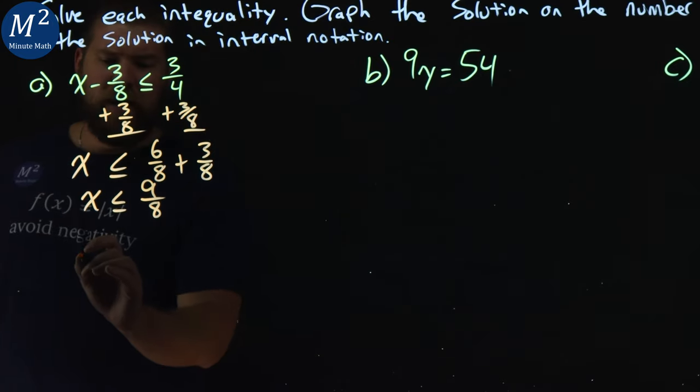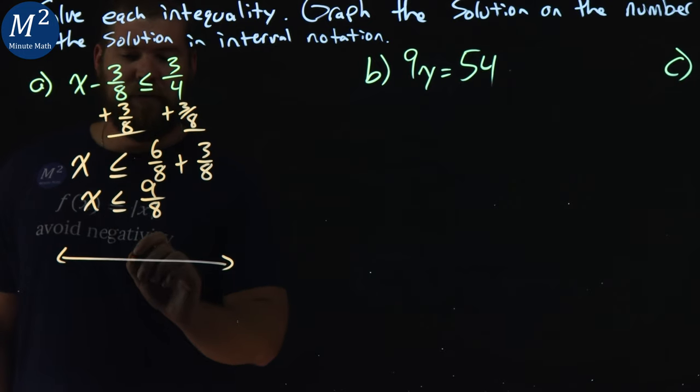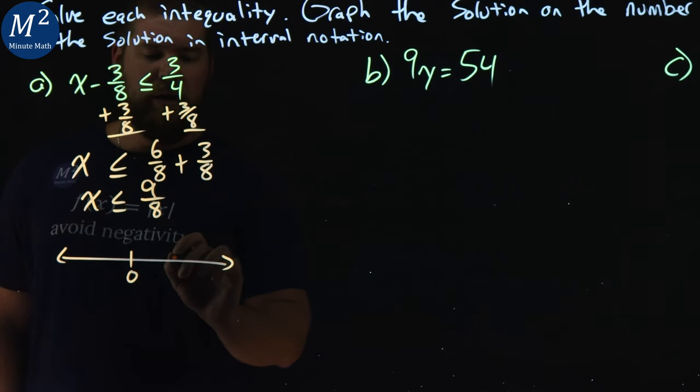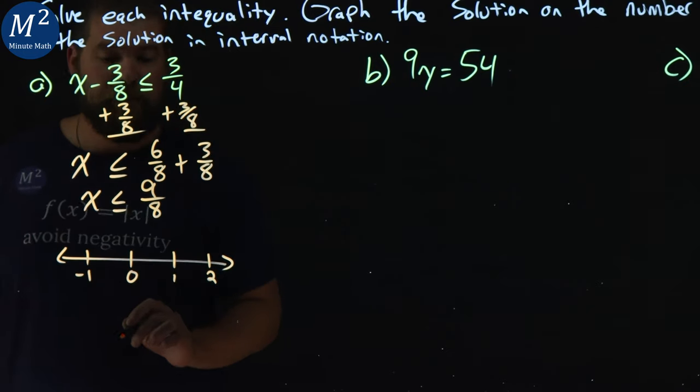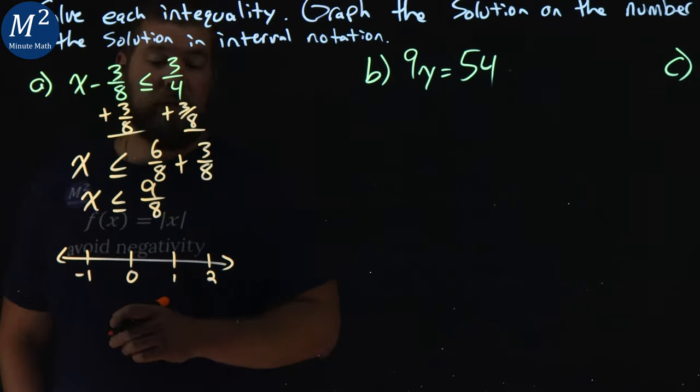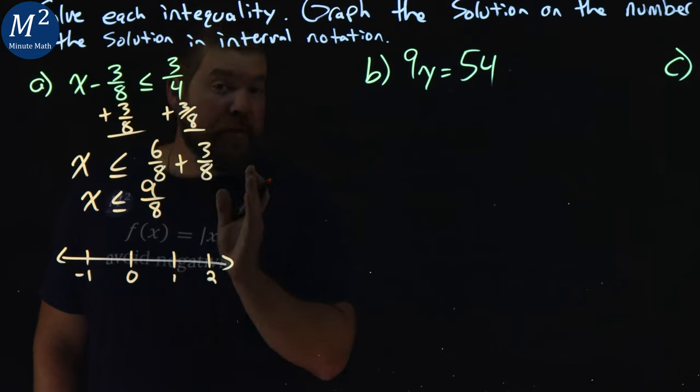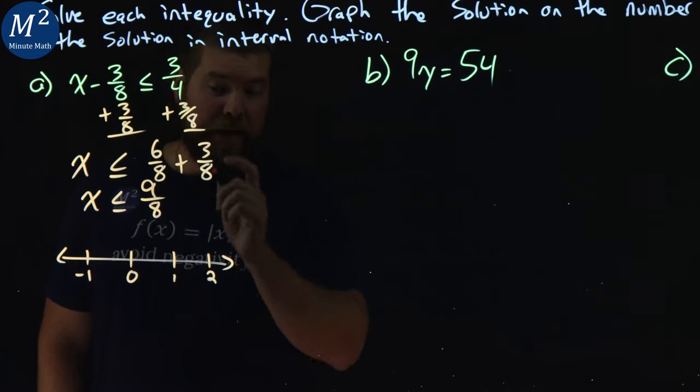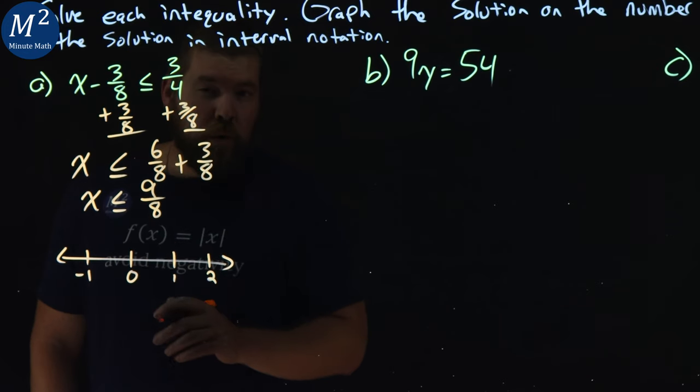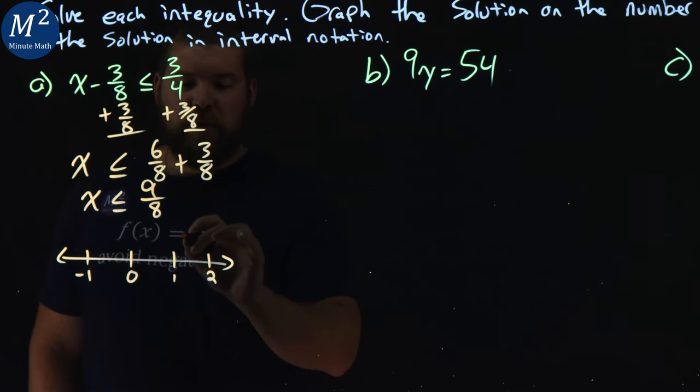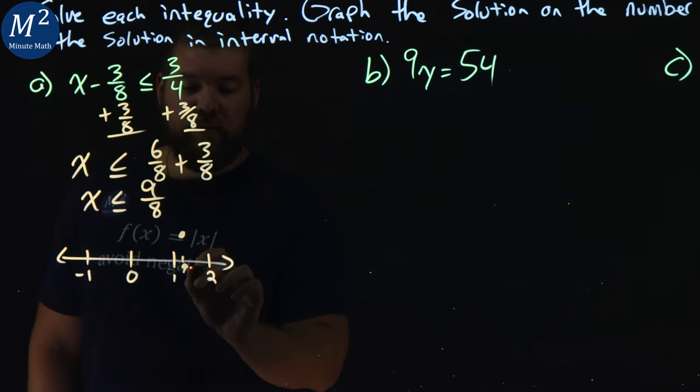So if we write this on a number line here, let's give some space. I'm going to put 0 here, I'm going to put 1 here, I put 2 here, and I put a negative 1 here. x is less than or equal to 9 eighths. 9 eighths is just above 1, that would be 8 eighths. So I'm looking at a value just above 1 here, and we said x can equal that 9 eighths. So we can put a closed circle right here, and we'll make a little mark and say that's at 9 eighths.